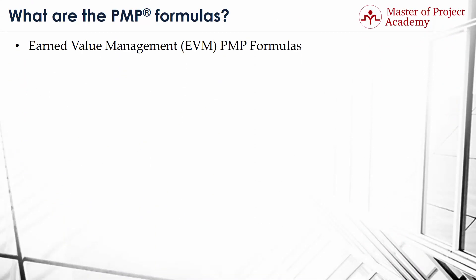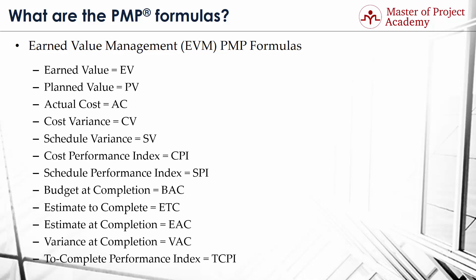Earned Value Management or EVM PMP Formulas. To understand PMP formulas related to earned value management, you need to know the following abbreviations: Earned Value = EV, Planned Value = PV, Actual Cost = AC, Cost Variance = CV, Schedule Variance = SV, Cost Performance Index = CPI, Schedule Performance Index = SPI, Budget at Completion = BAC, Estimate to Complete = ETC, Estimate at Completion = EAC, Variance at Completion = VAC, and To Complete Performance Index = TCPI.